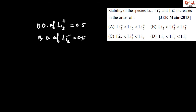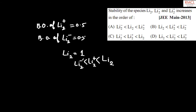Normal Li2 has a single bond, so Li2 has a bond order of 1. Therefore, the stability order is Li2 > Li2 plus > Li2 minus. The correct answer for this question is option C.